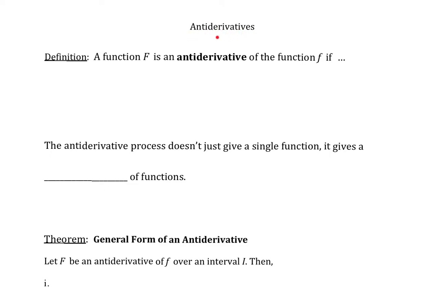Let's talk about antiderivatives. A function capital F is an antiderivative of the function lowercase f if, when you take the derivative of capital F of x, you get lowercase f of x for all x in the domain of lowercase f. So it's almost like you're doing the opposite of taking a derivative, and that's why we call it an antiderivative.